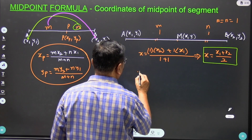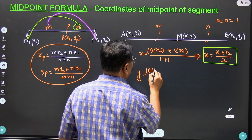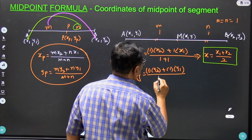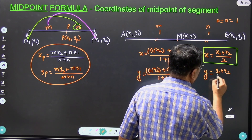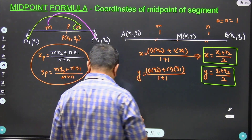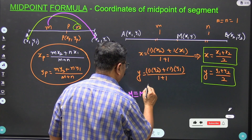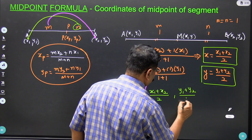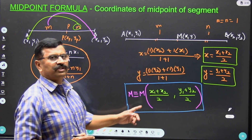Similarly we can find the y coordinate of M. The y coordinate is 1*y2 plus 1*y1 divided by 1 plus 1, so therefore y coordinate is y1 plus y2 upon 2. Hence the coordinates of midpoint M of segment AB are (x1 plus x2 upon 2, y1 plus y2 upon 2). This gives the coordinates of the midpoint and is known as the midpoint formula.